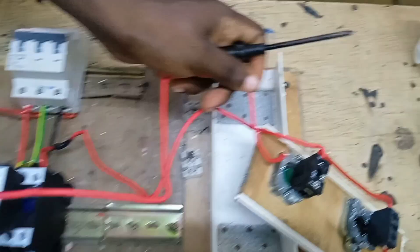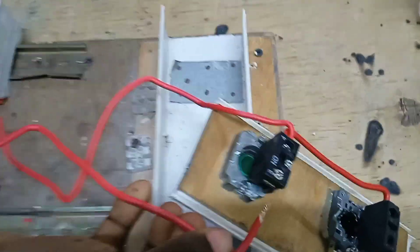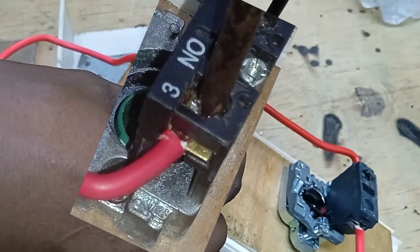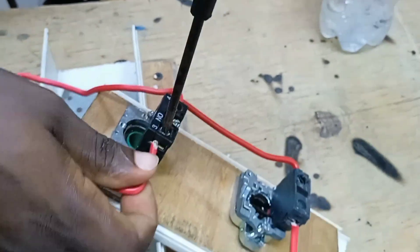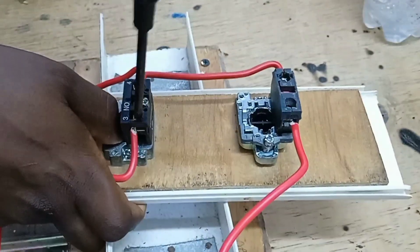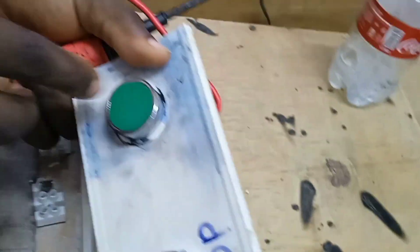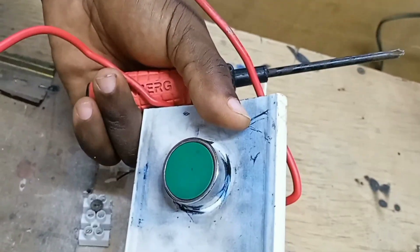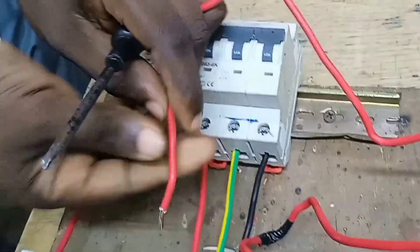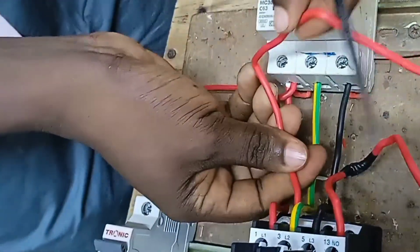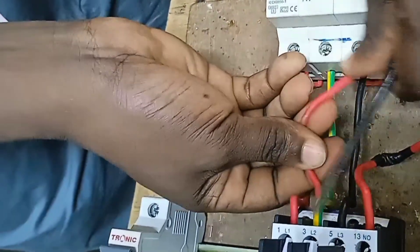At the output of the stop push button, which is the green one, we have connected this cable. We are going to connect it to A1, that is the coil of our main contactor. This is A1. We are going to connect it to A1 here.